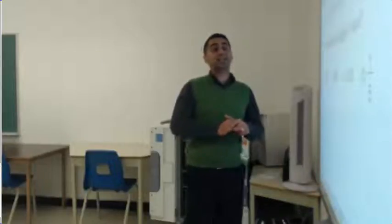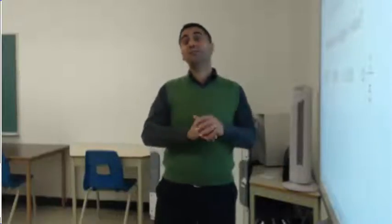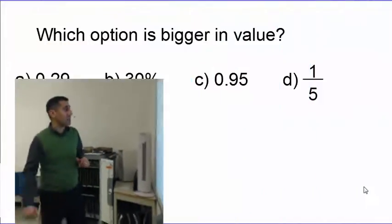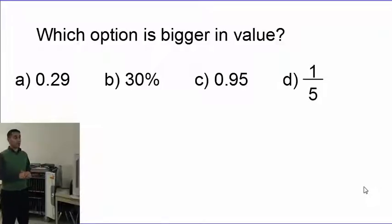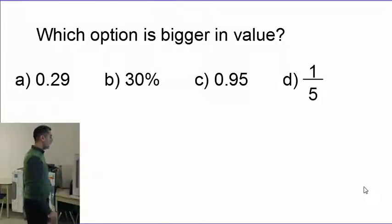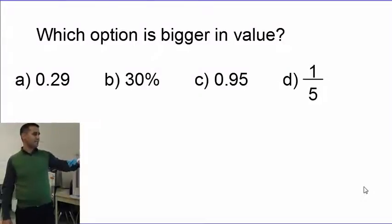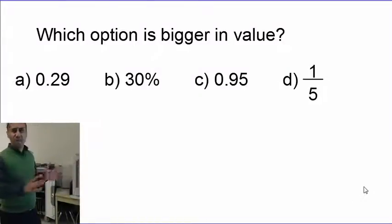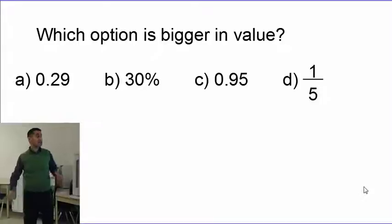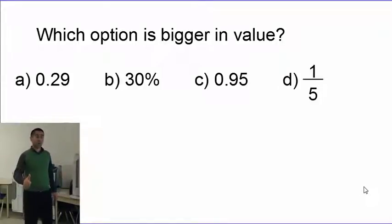Decimals, percentages, and fractions — when you have different numbers and want to compare which one has the greater value, let's work on that. I have four options here. Which one has the bigger value? I don't know — that's 29, this is 30, that's 95, and this is 1-point-something. I have no idea, so let's make sure they all have the same version.